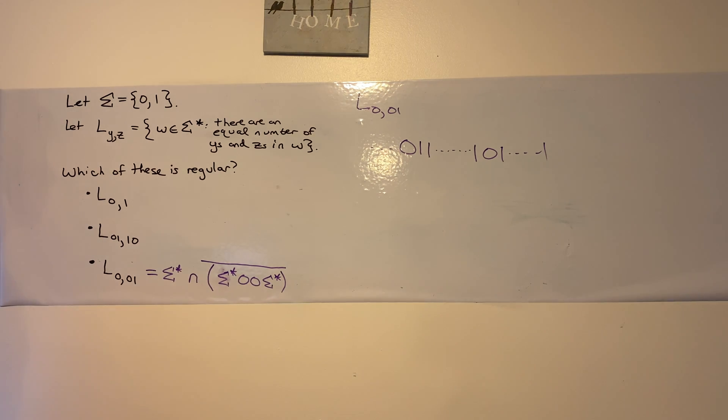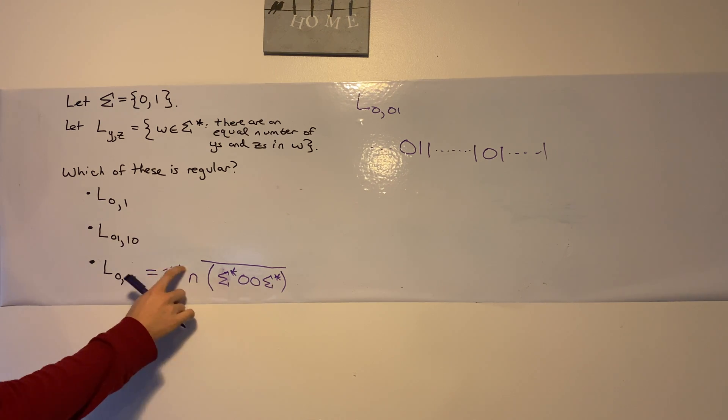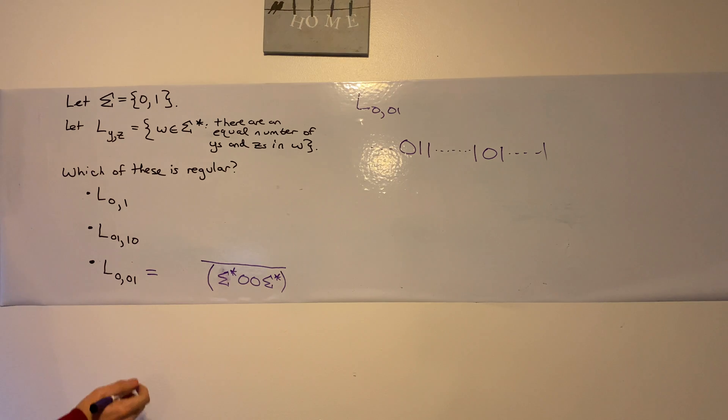The stuff on the inside is a regular expression, so it's regular. And we have a complement on the outside, which means that it's regular by closure under complement. So therefore, the whole thing is regular. And we can actually get rid of this sigma star intersection thing because the sigma star intersection anything is the anything. So this one is, in fact, regular.